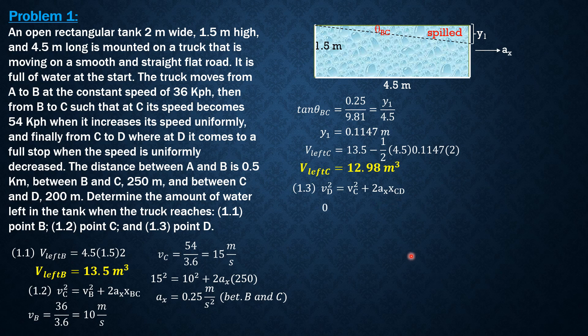So 0^2 = 15^2 + 2a_x(200). So we expect a_x to be negative because it is decelerating for the path between C and D.